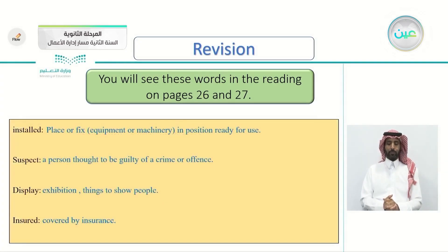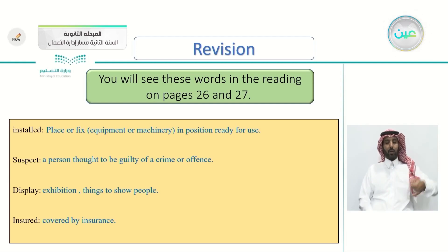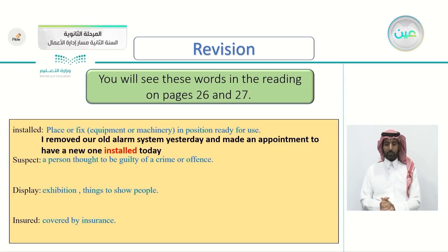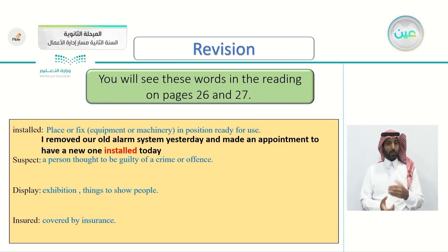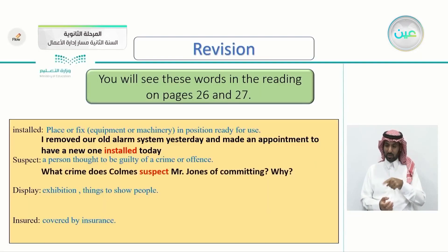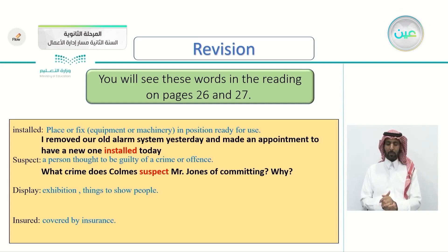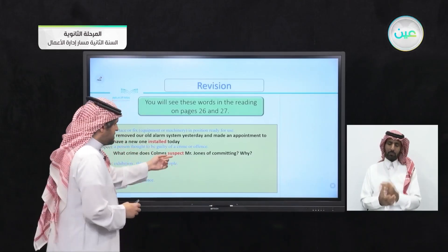The word 'installed' means to place or fix equipment or machinery in a position ready for use. We will see it in this sentence: 'I removed our old alarm system yesterday and made an appointment to have a new one installed today.' The word 'suspect' as a noun means a person thought to be guilty of a crime — he's not yet proven guilty but is thought to be. Here 'suspect' can be a verb: 'What crime does Combs suspect Mr. Jones of committing?' — that is a verb. As a noun, the suspect is the person.